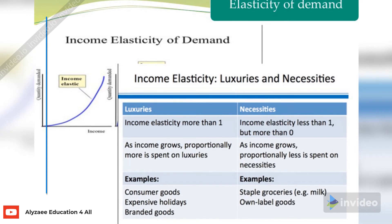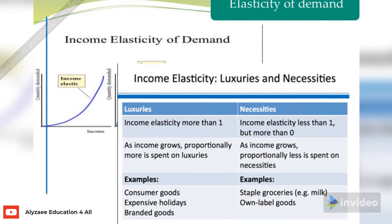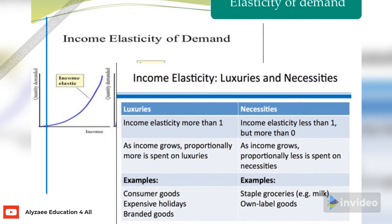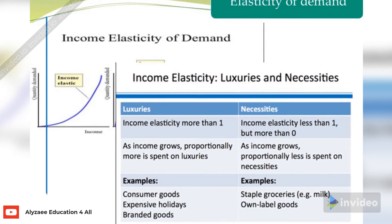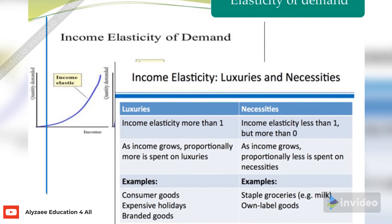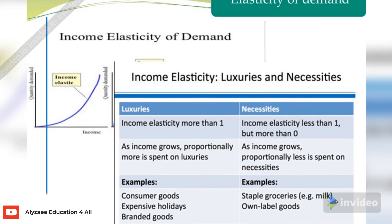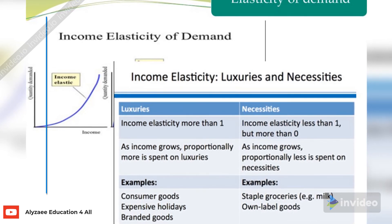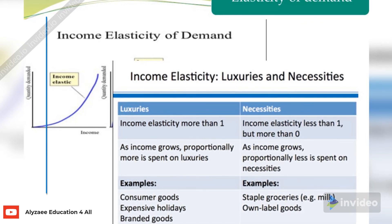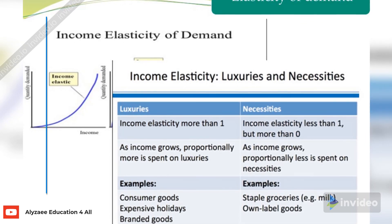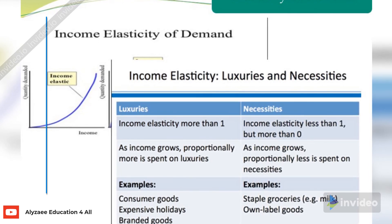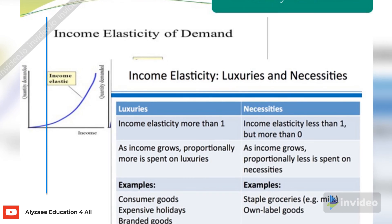For example, in luxuries there are consumer goods like expensive holidays — visiting Malaysia, Dubai, Abu Dhabi, US, or UK — and branded goods like Chanel, Porsche, Ferrari, or Harley Davidson. A bike is a bike; a Honda can serve the purpose, but a Harley Davidson is expensive. In necessities, examples include staple groceries like tea, milk, and other grocery items. That is the comparison between luxury and necessary items.